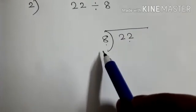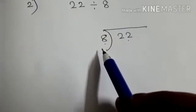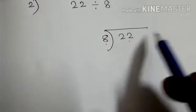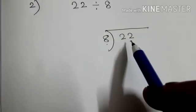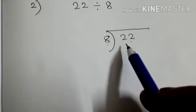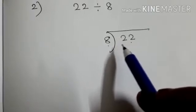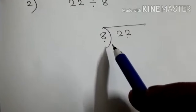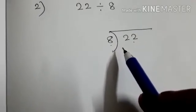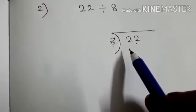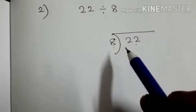8 1's are 8. 8 2's are 16. 8 3's are 24. See 24 is more than 22. 24 is more than our given dividend. So what we have to do here? Because we are not getting 22 in the table of 8. So children what we have to do? We have to take number which is less than 22. Because equal to we are not getting. So we have to take less.